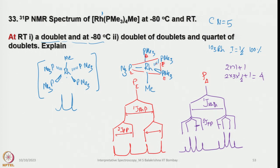At minus 80°C the compound shows trigonal bipyramidal geometry with two signals: doublet of doublets and quartet of doublets. At room temperature it converts to square pyramidal geometry with all 4 trimethylphosphines in the plane, showing just coupling with rhodium as a doublet.